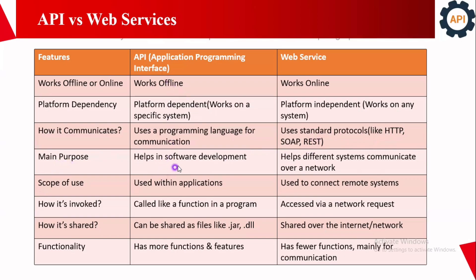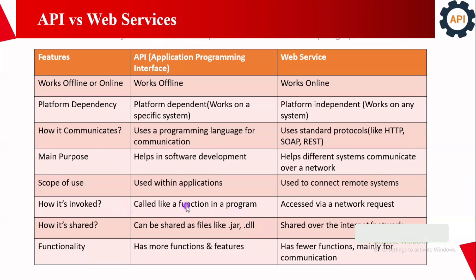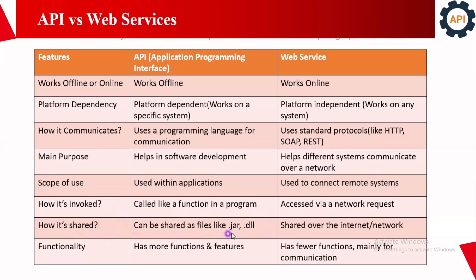The main purpose of an API is to help in software development, while web services help different systems communicate over a network or internet. Scope of use: APIs are usually used within applications, while web services are used to connect remote systems. How it's shared: APIs can be shared as a file like a .jar or .dll, while web services are shared over the internet or network. For example, Selenium's standalone jar is an offline API — it's a bunch of code integrated in one jar.